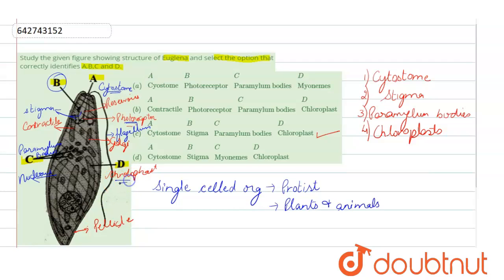The pyrenoids which is called the proteinaceous body may be present in the chloroplast. Here the pyrenoids are present. The endoplasm contains several paramylum bodies. The endoplasm contains the paramylum bodies. I hope I have answered your question well now. Thank you.